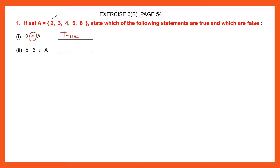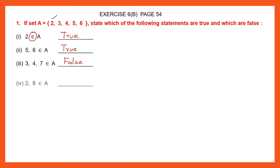Second one: 5 and 6 belong to set A — True. Question 3: 3, 4 and 7 belong to set A. We can see 3 and 4, but 7 does not belong to set A. So this statement is false. Question 4: 2 and 8 belong to set A. 2 is there but 8 is not there. So this statement is false.